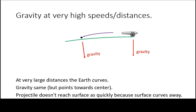However, at very large distances we start to notice the curvature of the surface of the Earth. This means that while our projectile is still pulled the same way by gravity and falls towards the surface, the surface underneath starts to curve out from underneath.